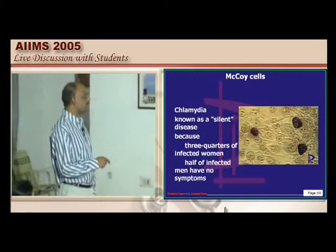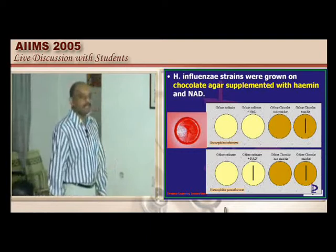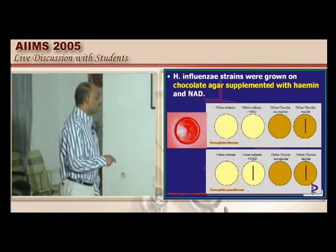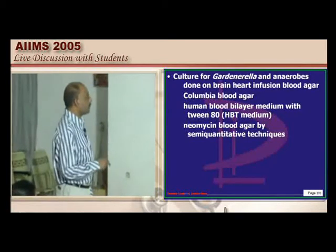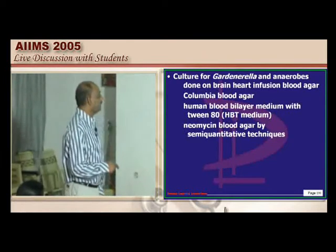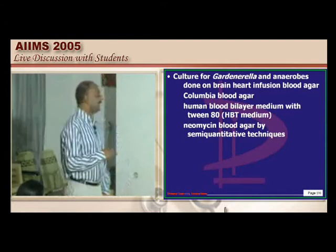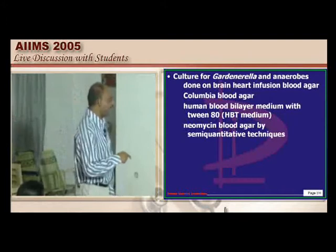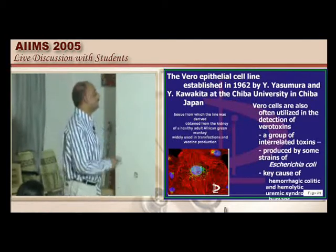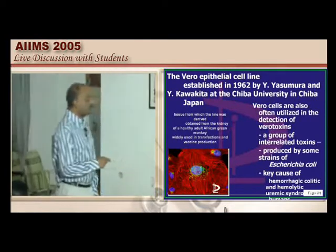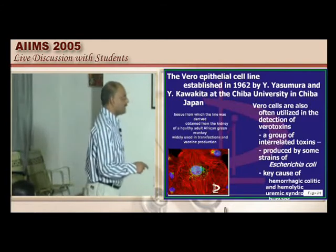A 45-year-old with abdominal pain, vaginal discharge, and cervicitis but no bacteria — the organism is Chlamydia, identified using McCoy cells. Chlamydia typically leads to a silent disease; three-quarters of infected women have no symptoms. Chocolate agar supplemented with hemin and NAD is used for H. influenzae — a favorite examiner question. The HBT (human blood bilayer Tween) medium is typically used for Gardnerella and anaerobes.